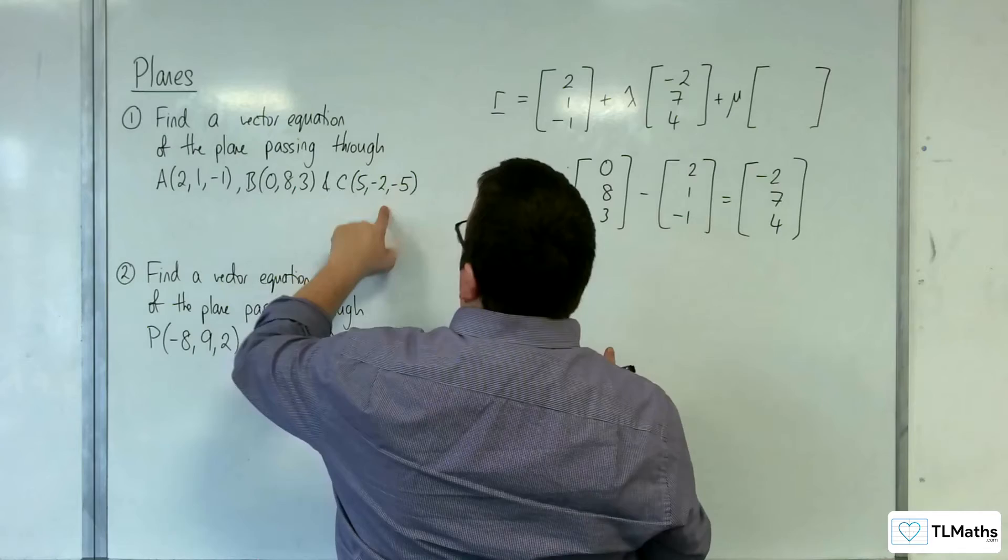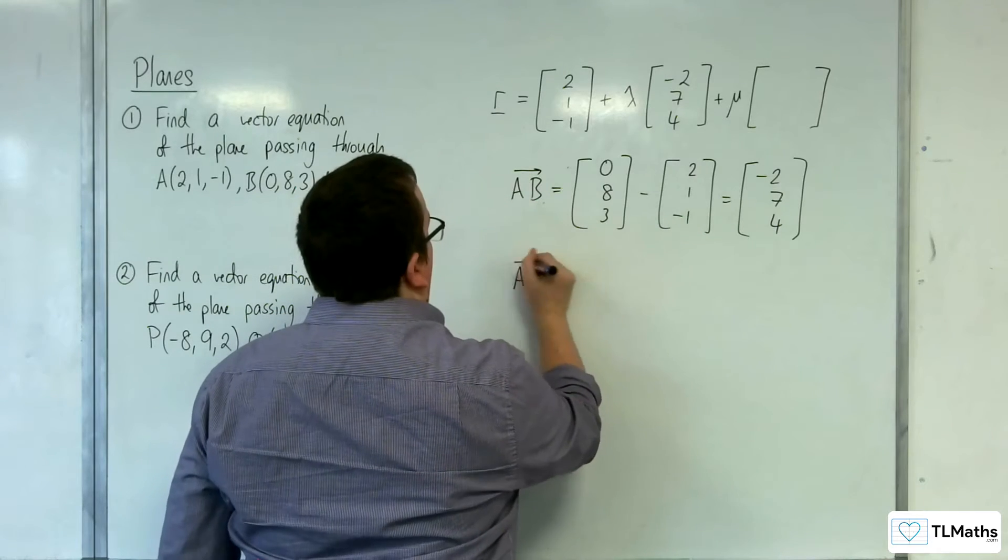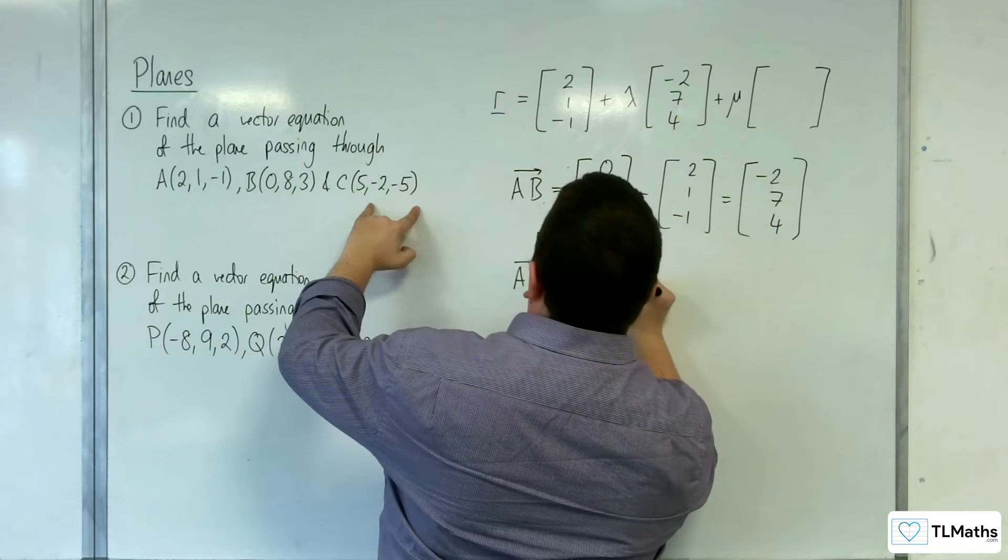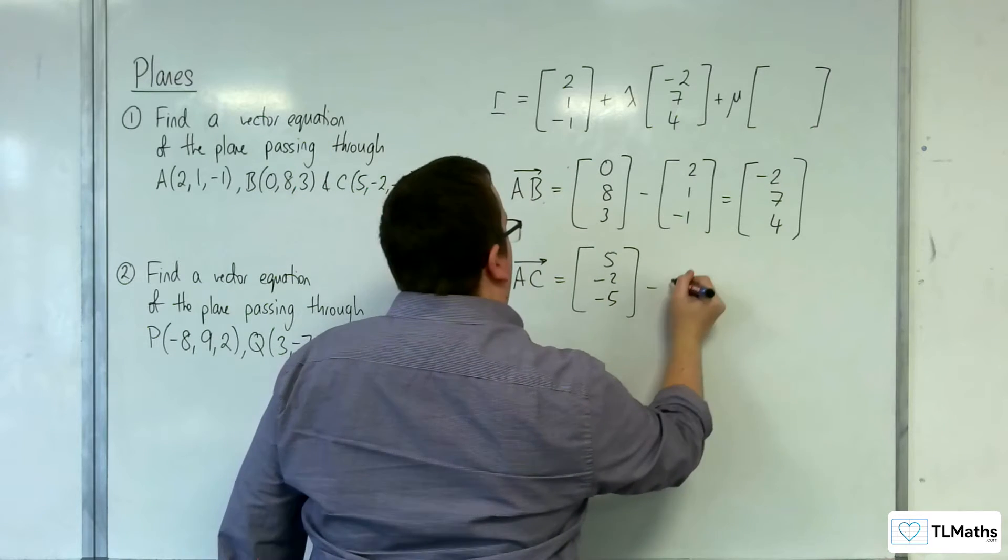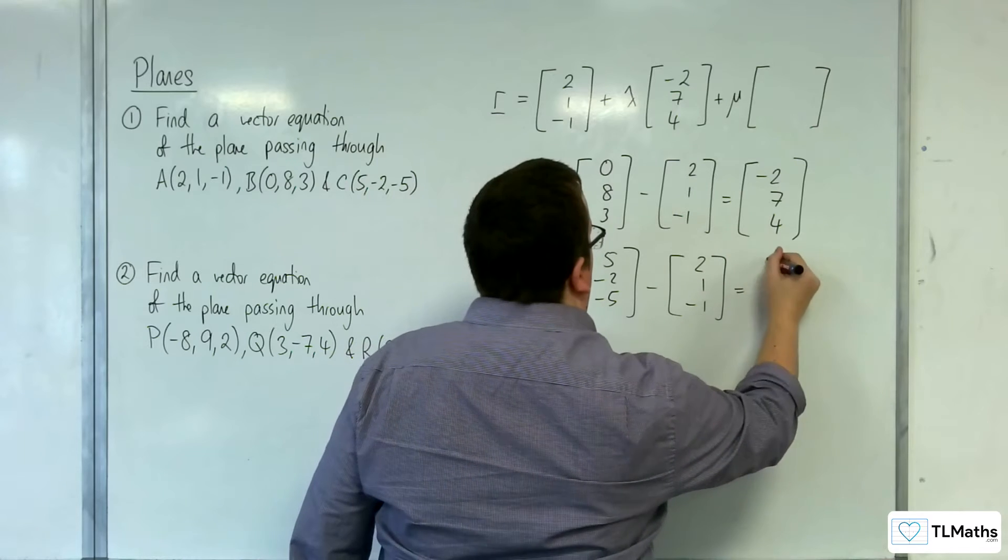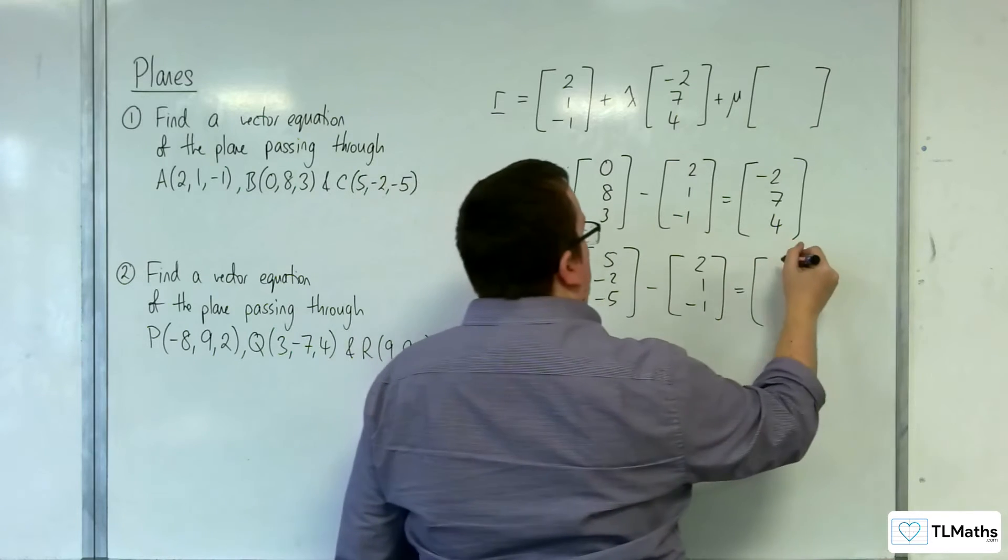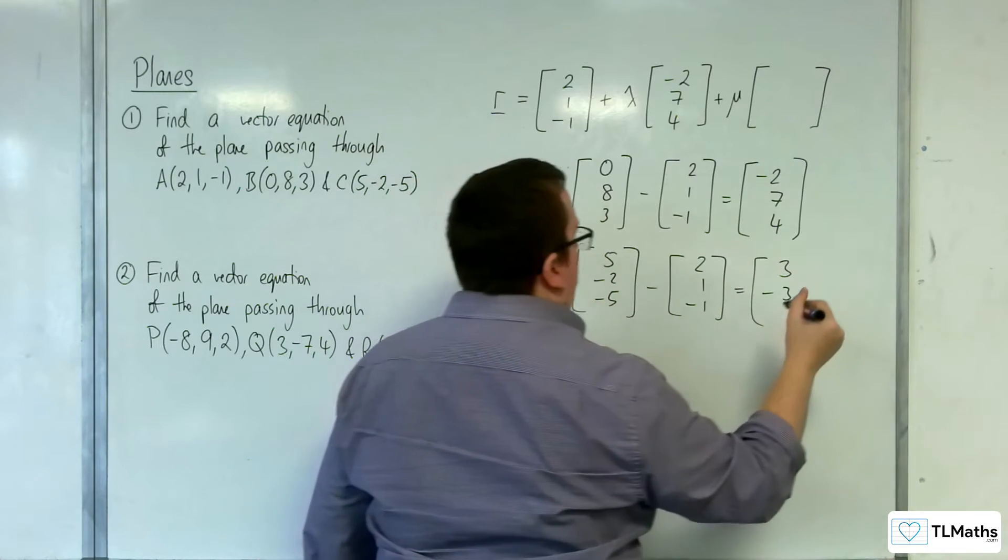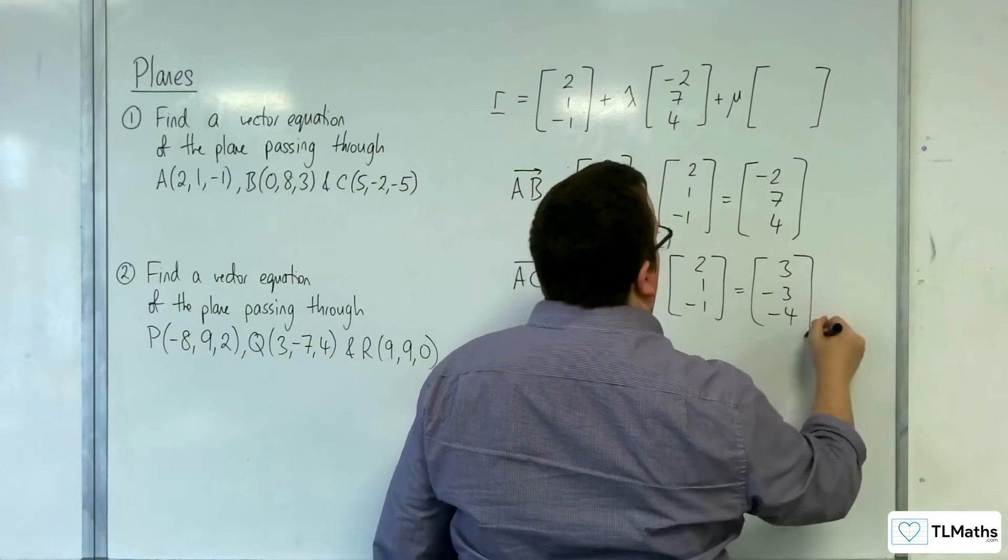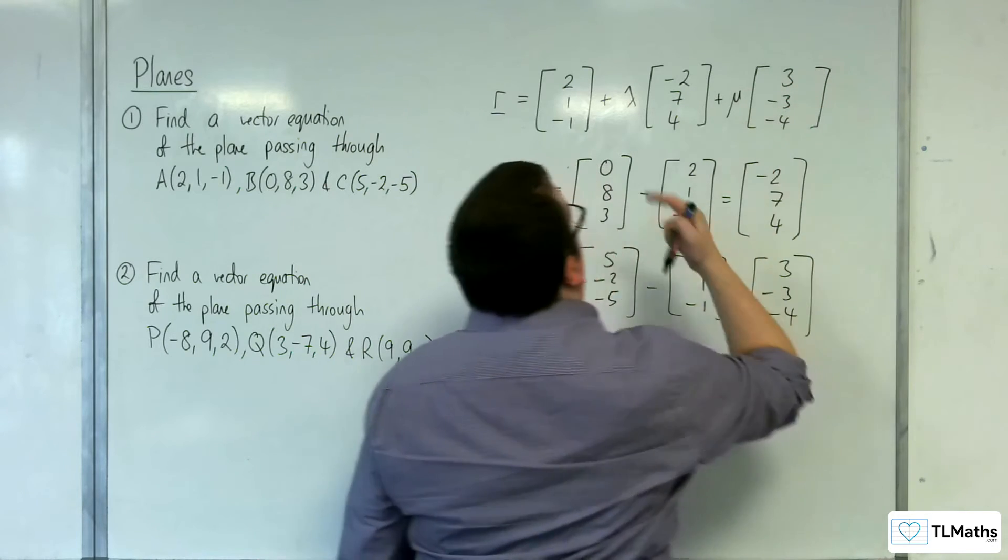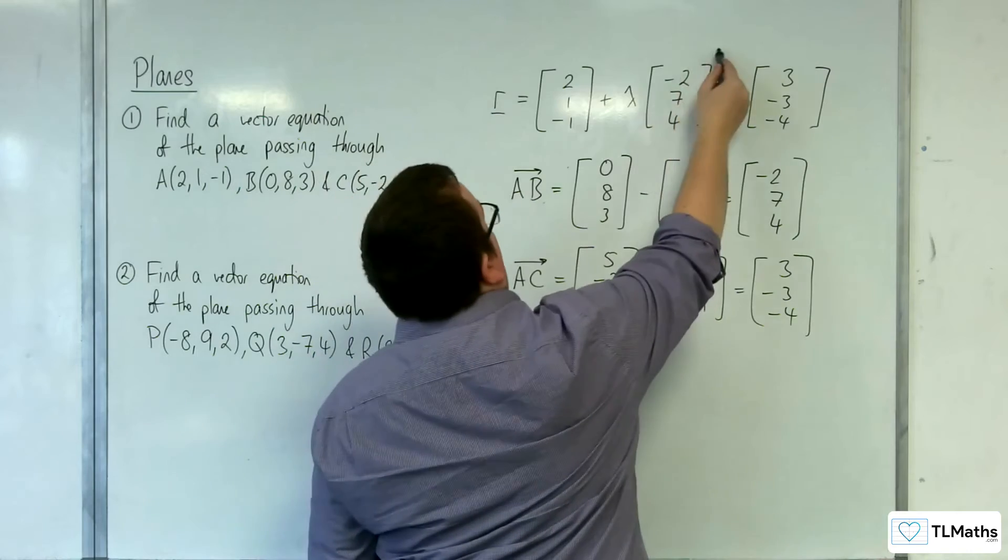And then I'll find AC. So AC is OC, 5, minus 2, minus 5, take away OA, which is 2, 1, minus 1. 5 take away 2 is 3, minus 2 take away 1 is minus 3, minus 5 take away minus 1 is minus 4. So 3, minus 3, minus 4 is the second direction vector.